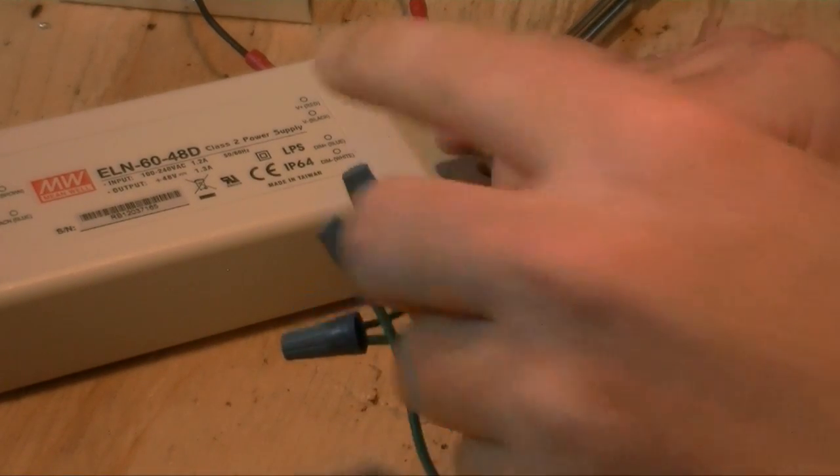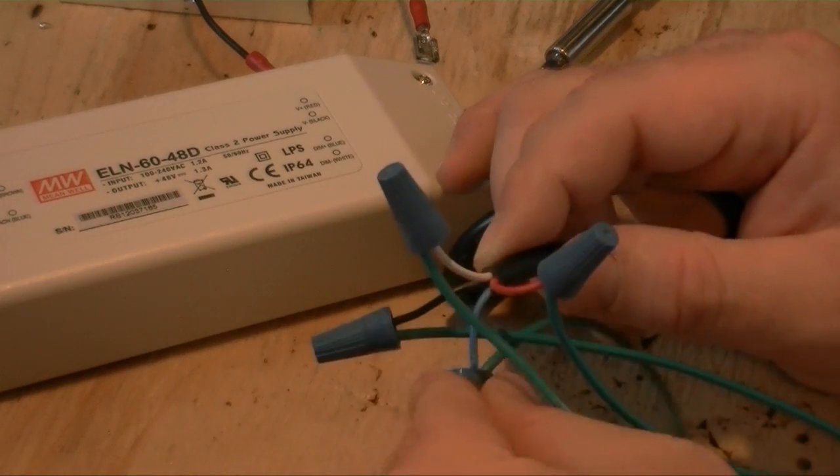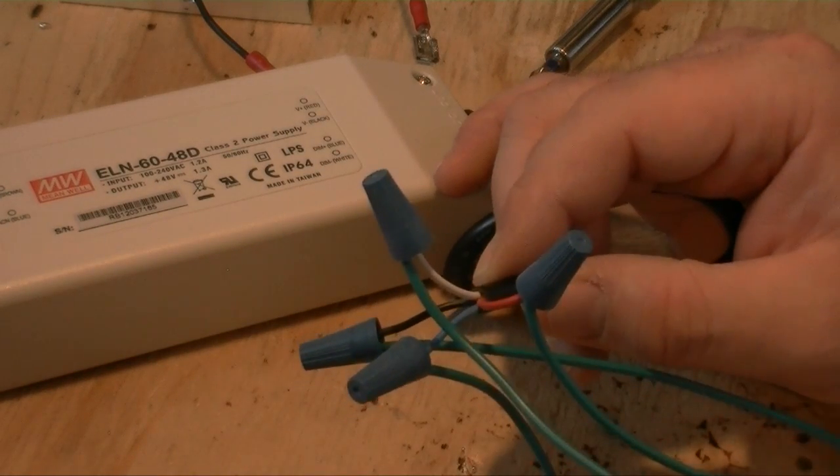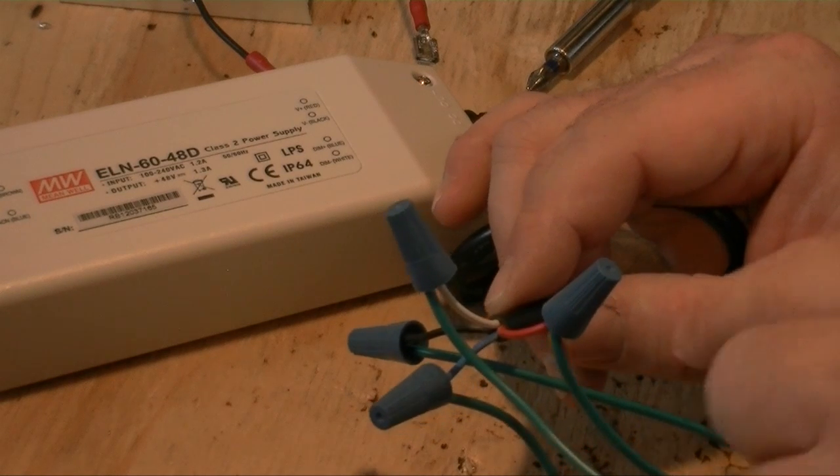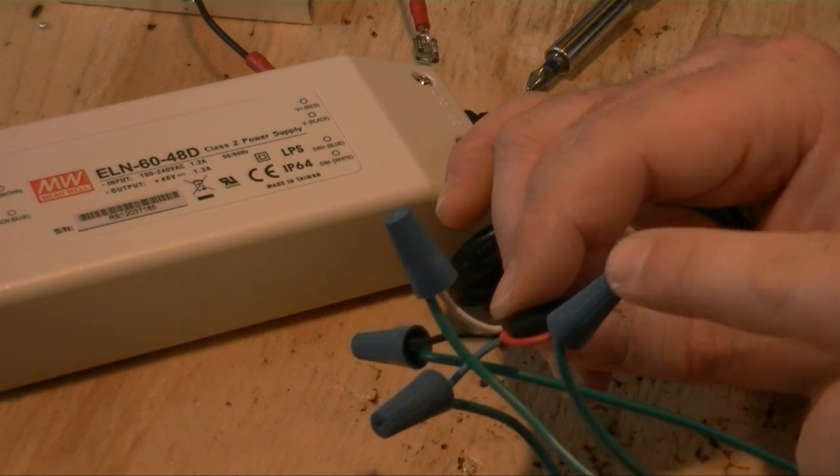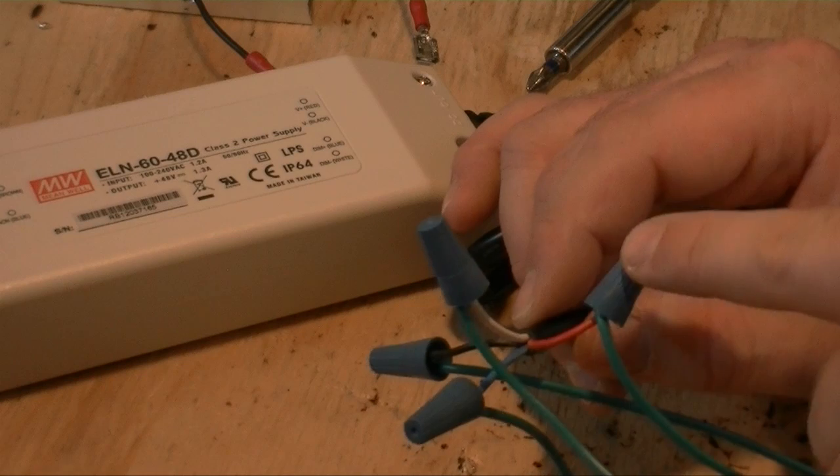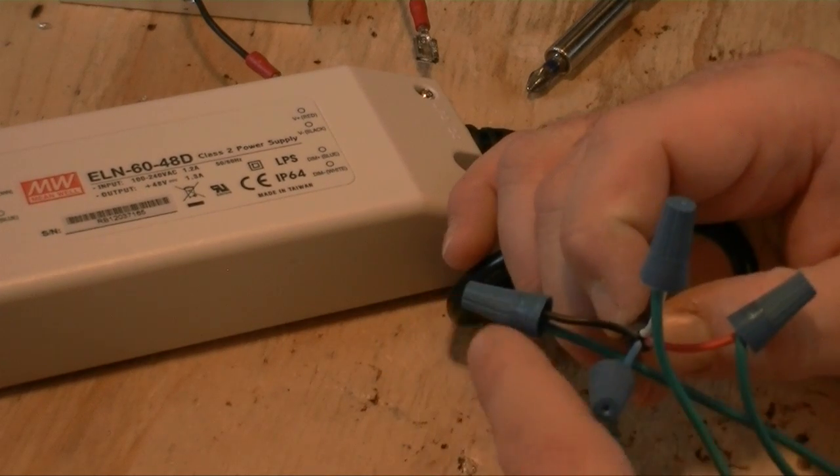Alright, let me quickly show you again. This is going to look like a mess, but if you're actually doing this with the items in hand, it'll make sense. Red goes to your LED positive, black goes to your LED negative.